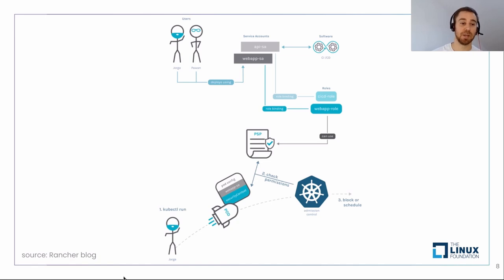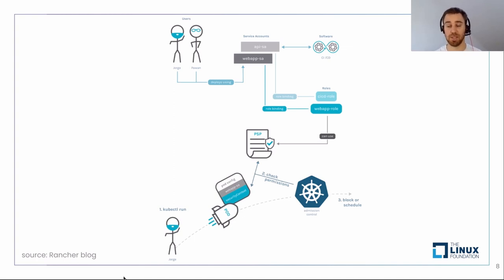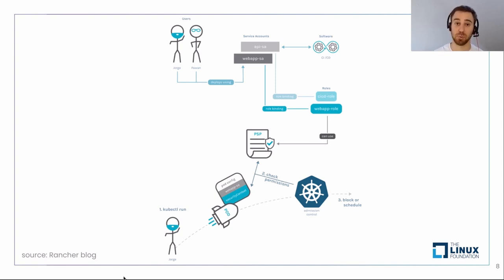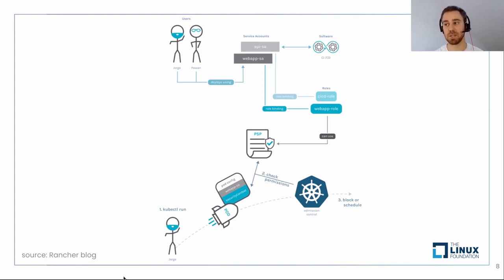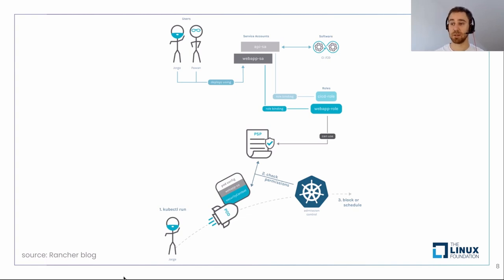Imagine we are Jorge, the user at the bottom. Jorge wants to create a pod using kubectl run. It gets checked by the PSP — if it's allowed, it gets scheduled; if not, it gets blocked. PSPs need to be bound for them to apply to a specific pod. Jorge is doing kubectl run with a service account called webapp.sa. The admins created the webapp.sa service account, did a role binding of webapp.sa with the webapp role, and in that role they said it can use the PSP. That's how PSPs are bound.